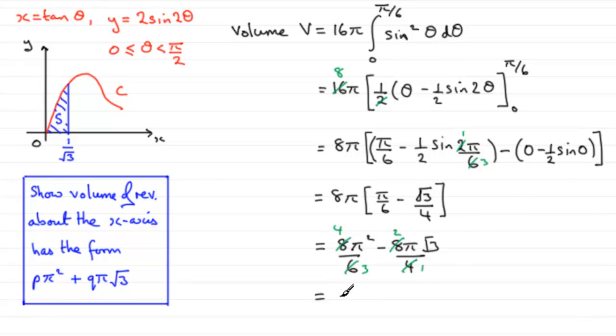So, therefore, we end up with 4 pi squared over 3 minus 2 pi root 3. So you can see that we've got it in this particular form. Not that we're asked to quote P and Q, but if we were, P would be 4 thirds, and Q, be careful here, would be minus 2.